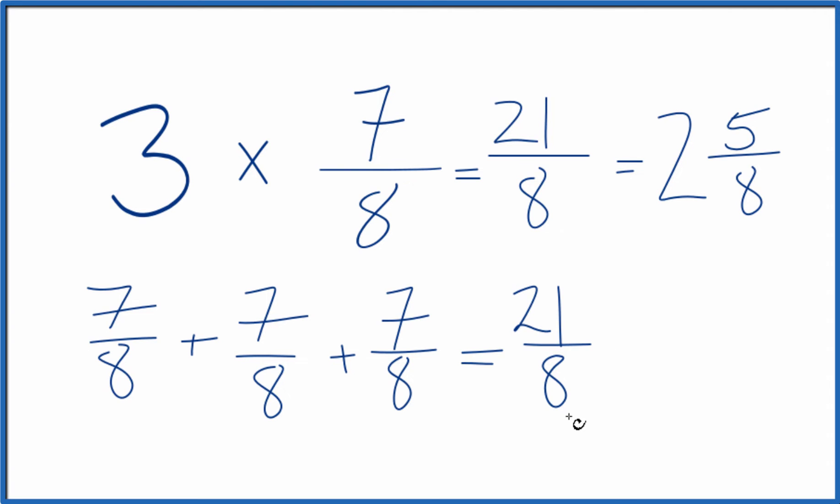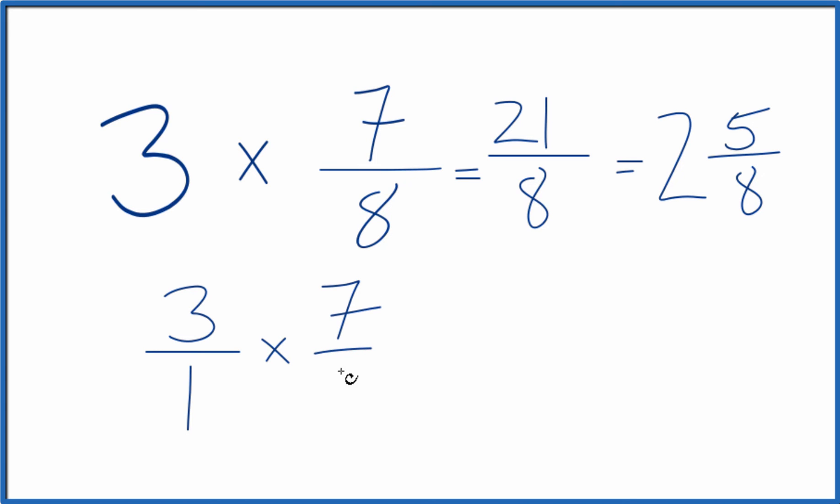There is another way we can do this. We could take 3, call that 3 over 1. 3 divided by 1, still 3. Now we have a fraction and we can multiply the fraction times 7 eighths.